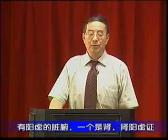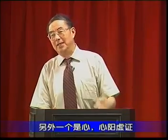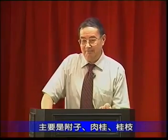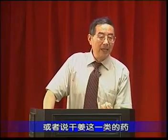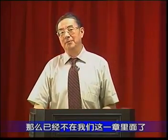为什么会出现这种差异性呢？因为我们在学中医诊断学时，阳虚的脏腑有肾阳虚症、心阳虚症、脾阳虚症，而肺和肝没有阳虚症，主要涉及三脏。治疗心和脾的阳虚症的药物，主要是附子、肉桂、桂枝或干姜这一类的药，已经不在我们这一章里面了，前面已经介绍过。所以剩下来的药在这一章里面，基本上都是补肾阳的。